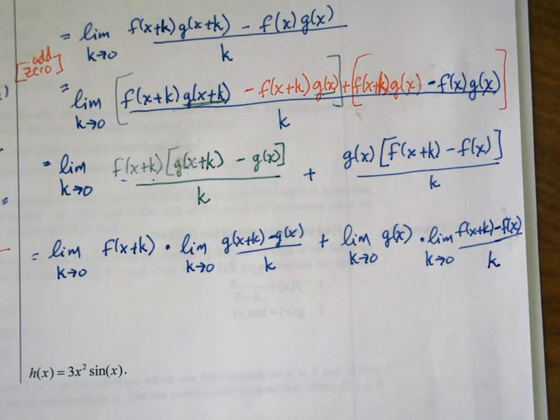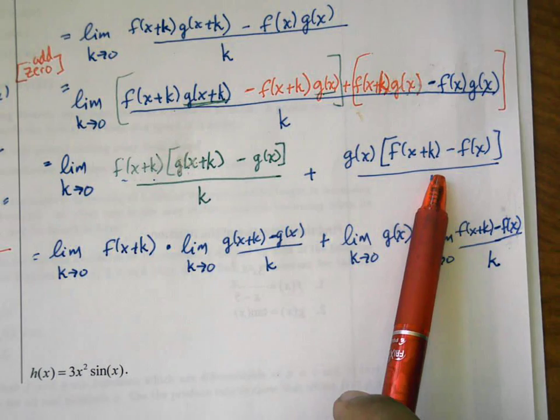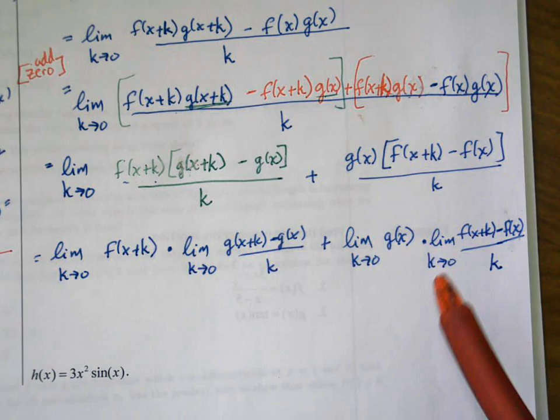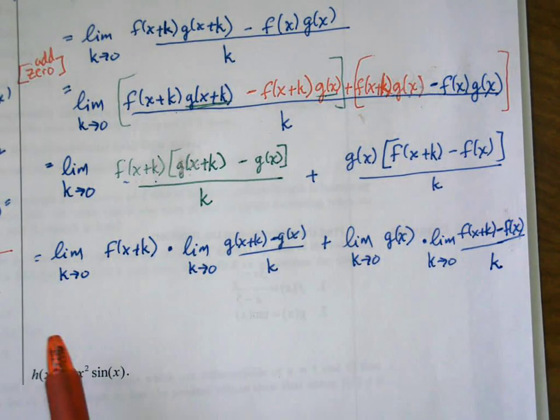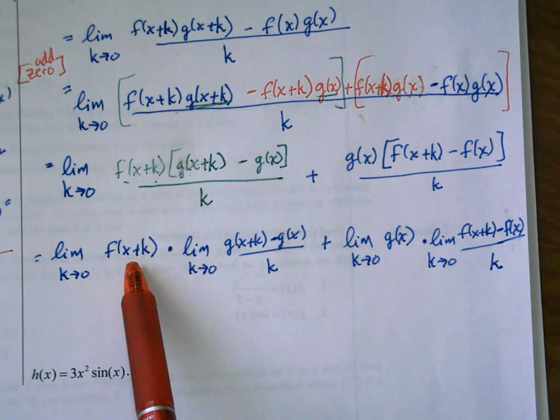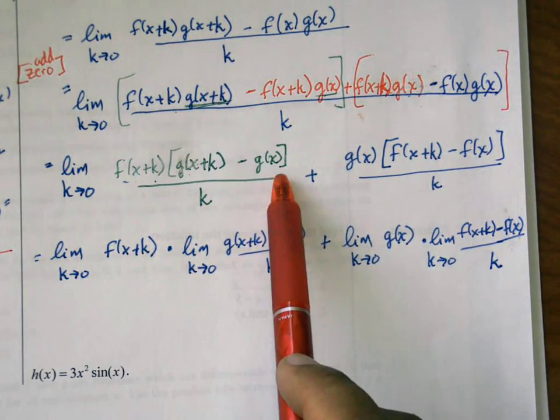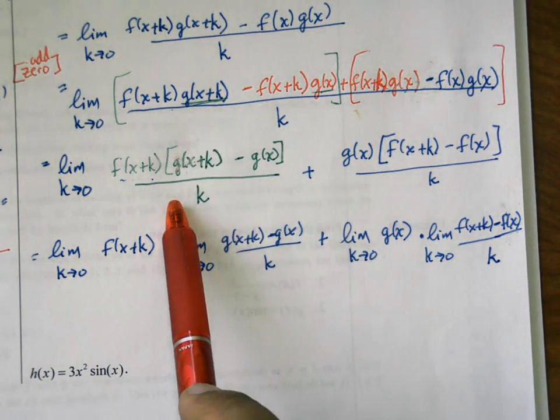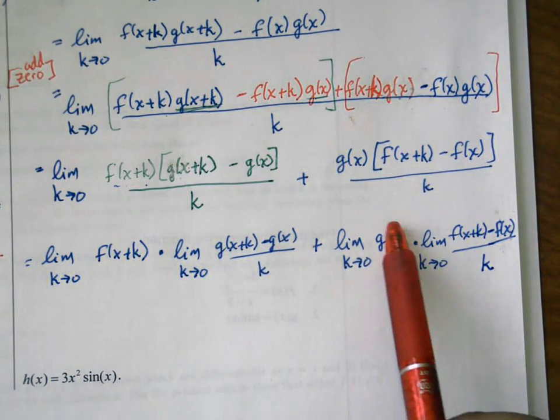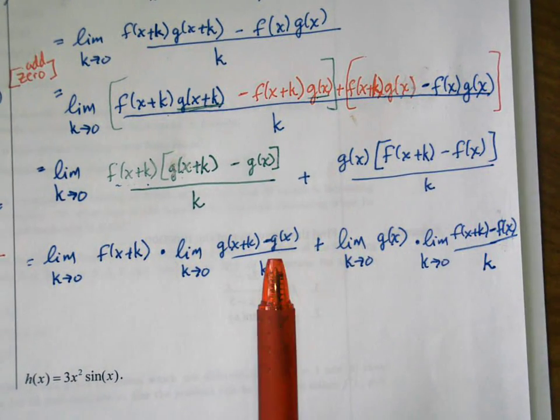What happened here was I have a limit of a long expression, and applying the properties of limits I could split it into each individual little limits. So instead of the limit of this green part, I can just say it's the limit of f of x plus k times the limit of this remaining part right here, g of x plus k minus g of x. And I can do the same thing over here. I can pull out and make that the limit of g of x times the limit of f of x plus k minus f of x.